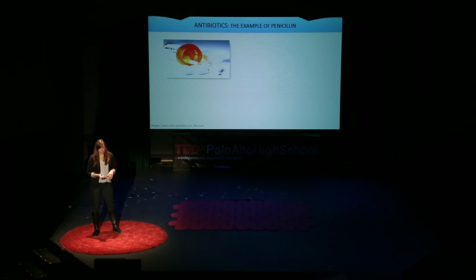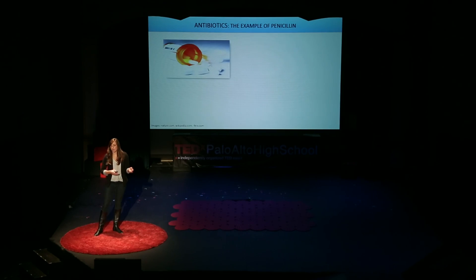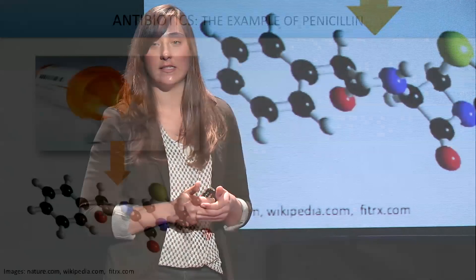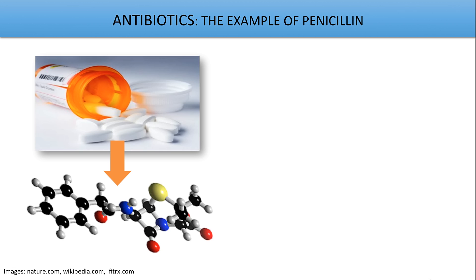So let's look at the example of penicillin. When you go to the drug store and fill your prescription, you may come home with a bottle that looks like this that contains some tablets. What's in these tablets are many many many molecules that look something like this. We have carbon in black, hydrogen in gray, oxygen in red, nitrogen in blue, and sulfur in yellow.